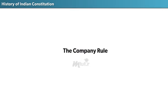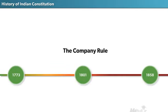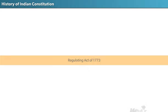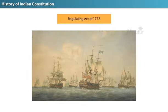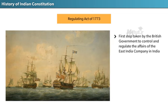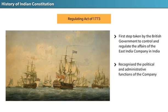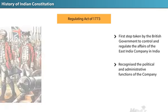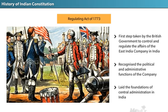The first four acts come under the Company Rule, spanning 1773 to 1858. The first is the Regulating Act of 1773. This Act was of great constitutional importance — it was the first step taken by the British government to control and regulate the affairs of the East India Company in India, recognized for the first time the political and administrative functions of the Company, and laid the foundations of central administration in India.